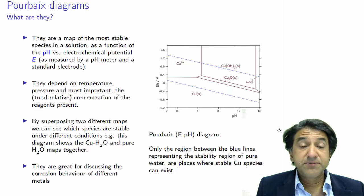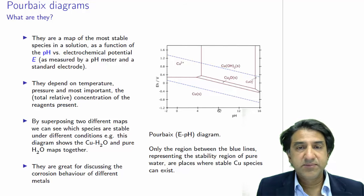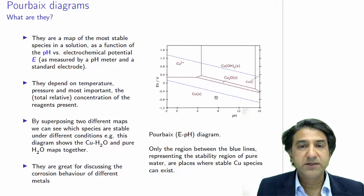This map does depend on certain variables. Obviously, because these are equilibria type lines, they will depend on the concentration of the species that are present. Typically, what's done is we assume that the total concentration of a species is constant. Or we may assume particular concentrations, 10^-3, 1 molar, whatever we're interested in. And assuming these concentrations, we will be able to calculate these lines or measure them. And the positions of the lines will change with concentration.